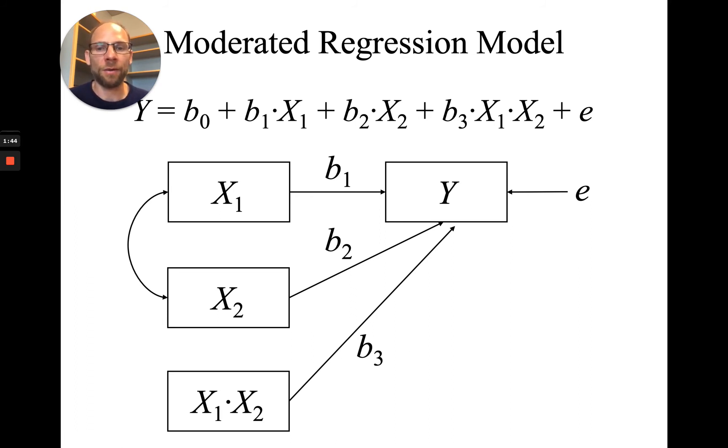If b3 is zero, then the interaction term drops from the model, and that means there's no interaction effect there. And then x1 and x2 can be correlated, and also the product term can be correlated with those lower order terms in the model.